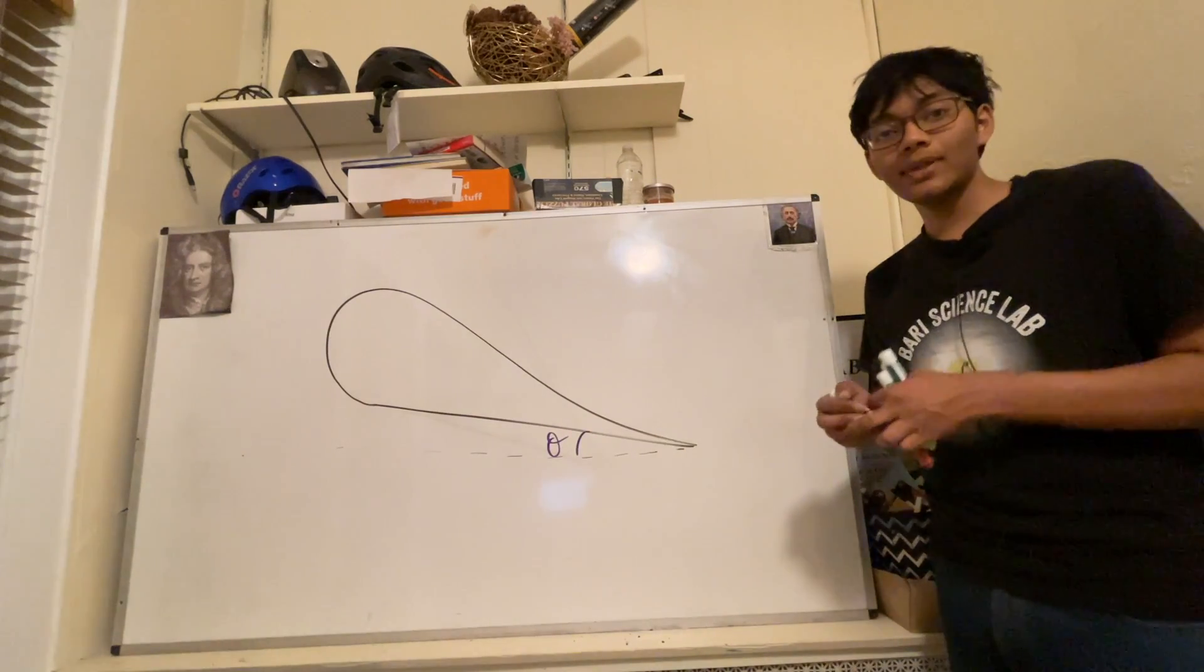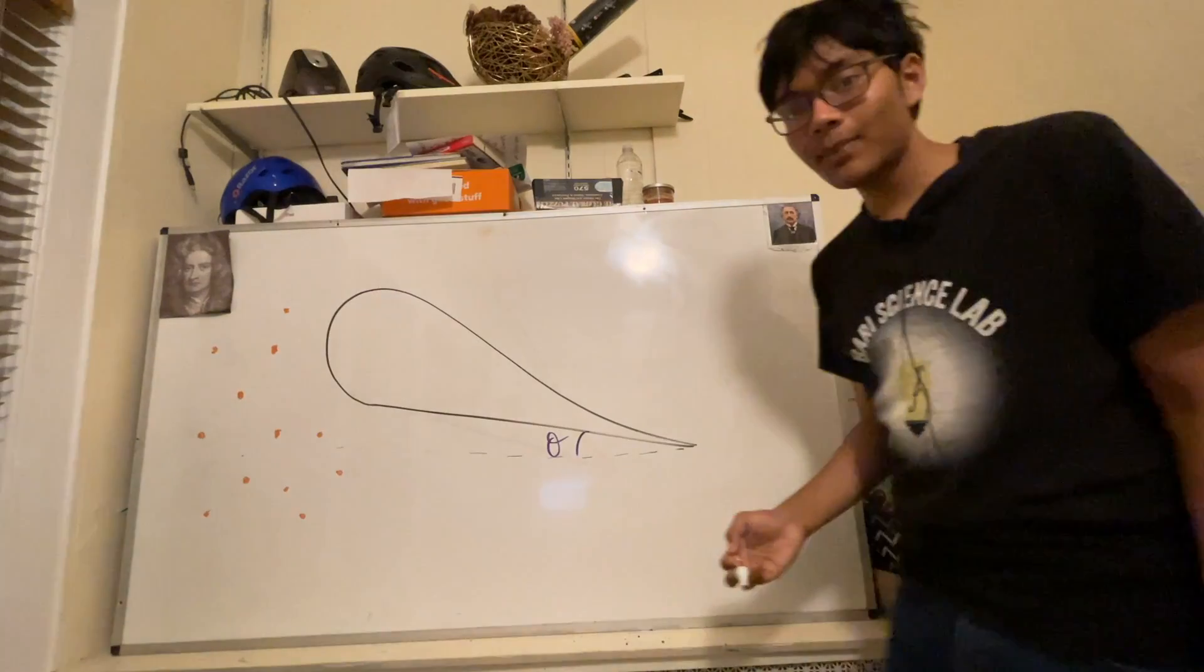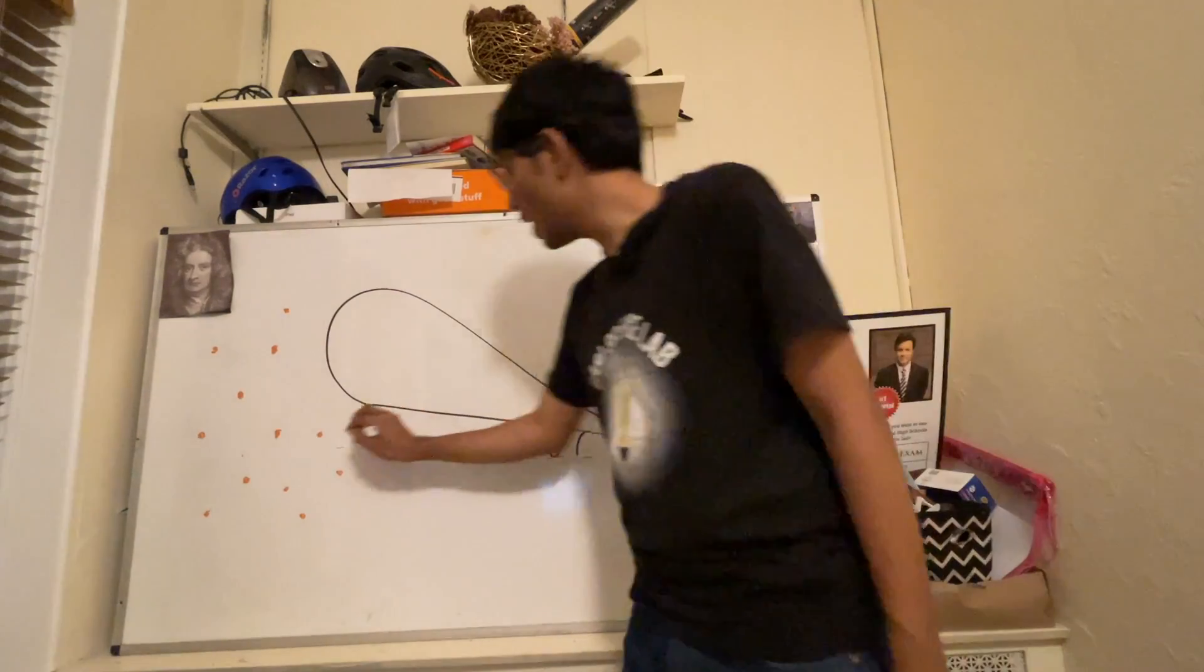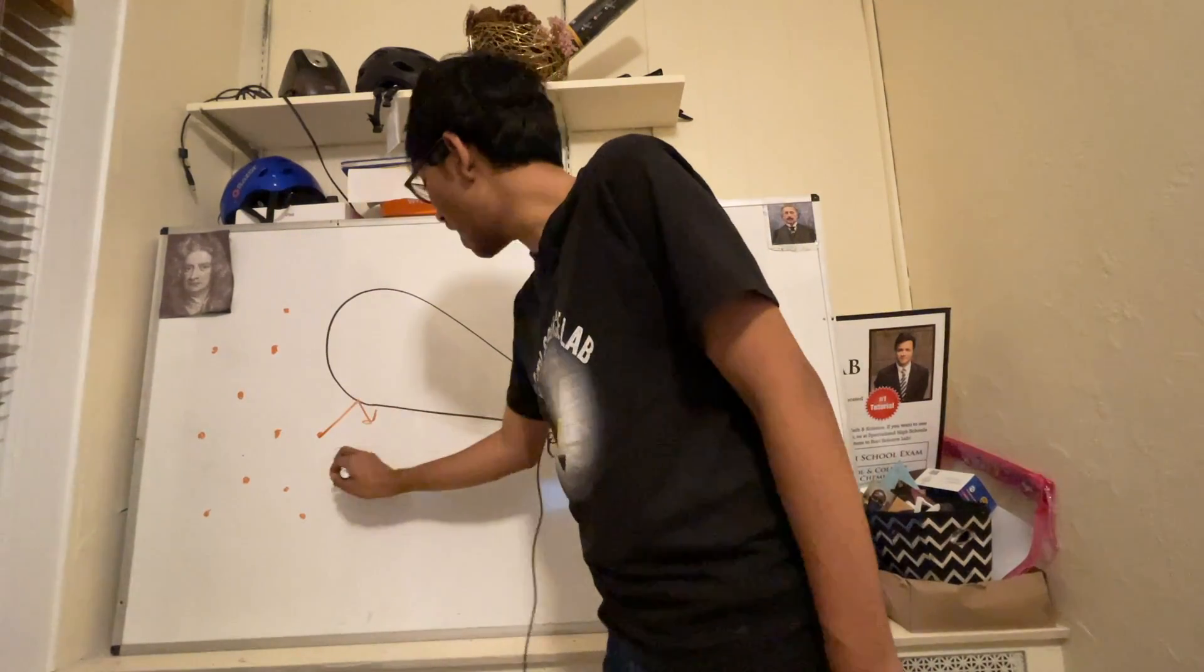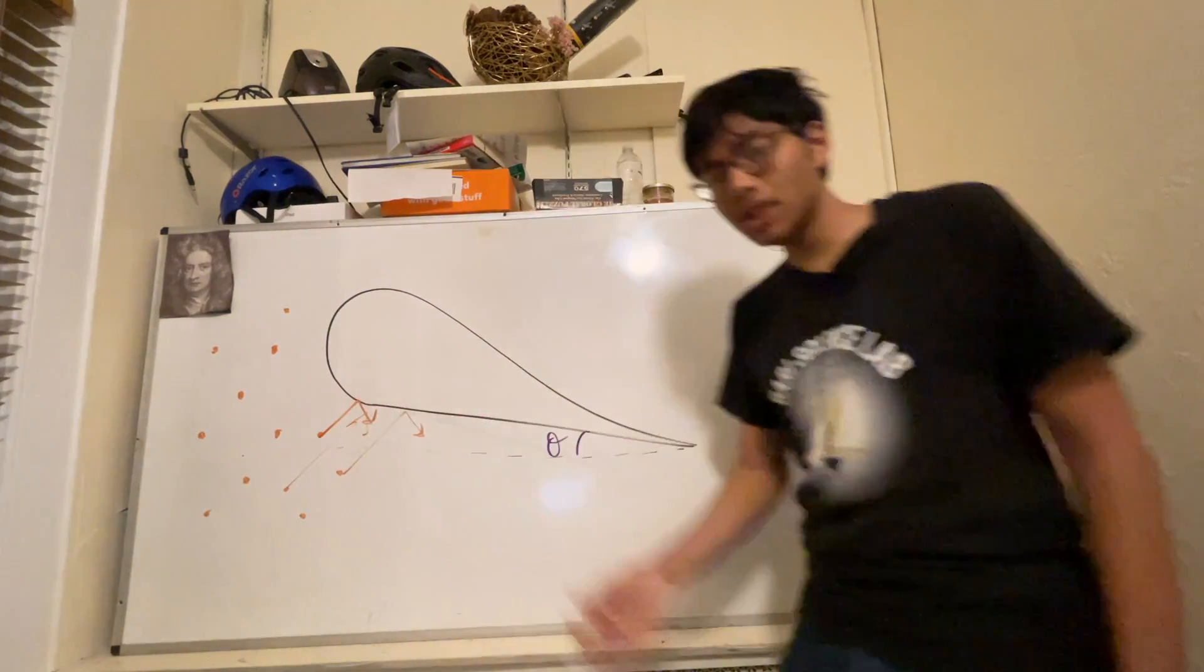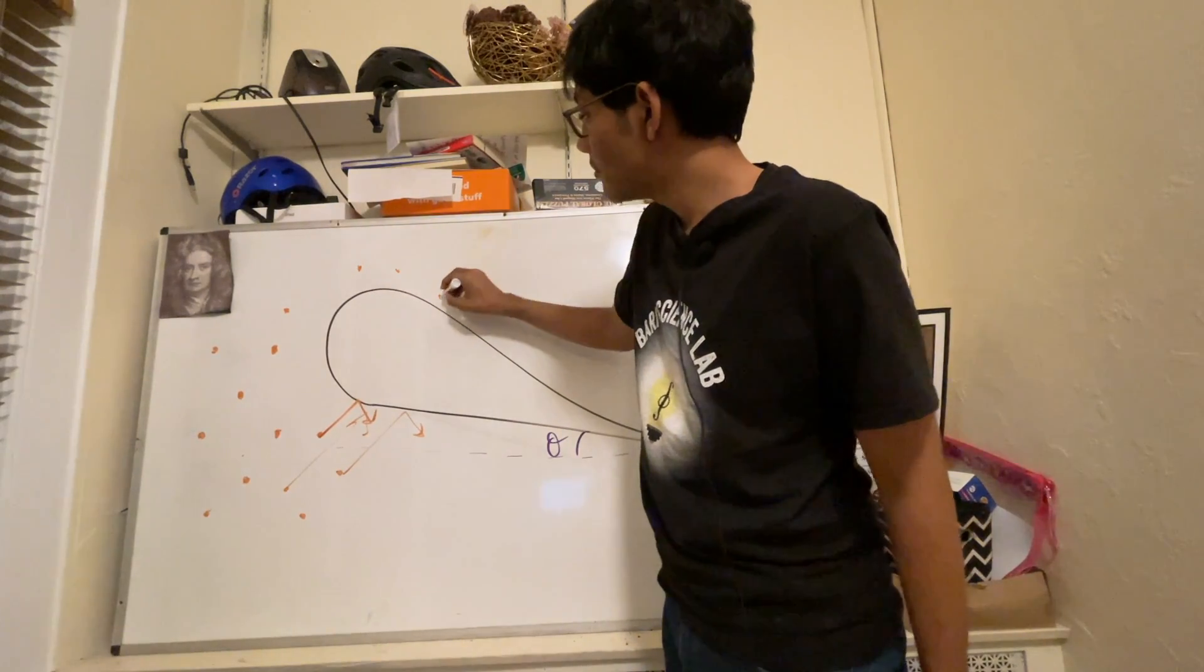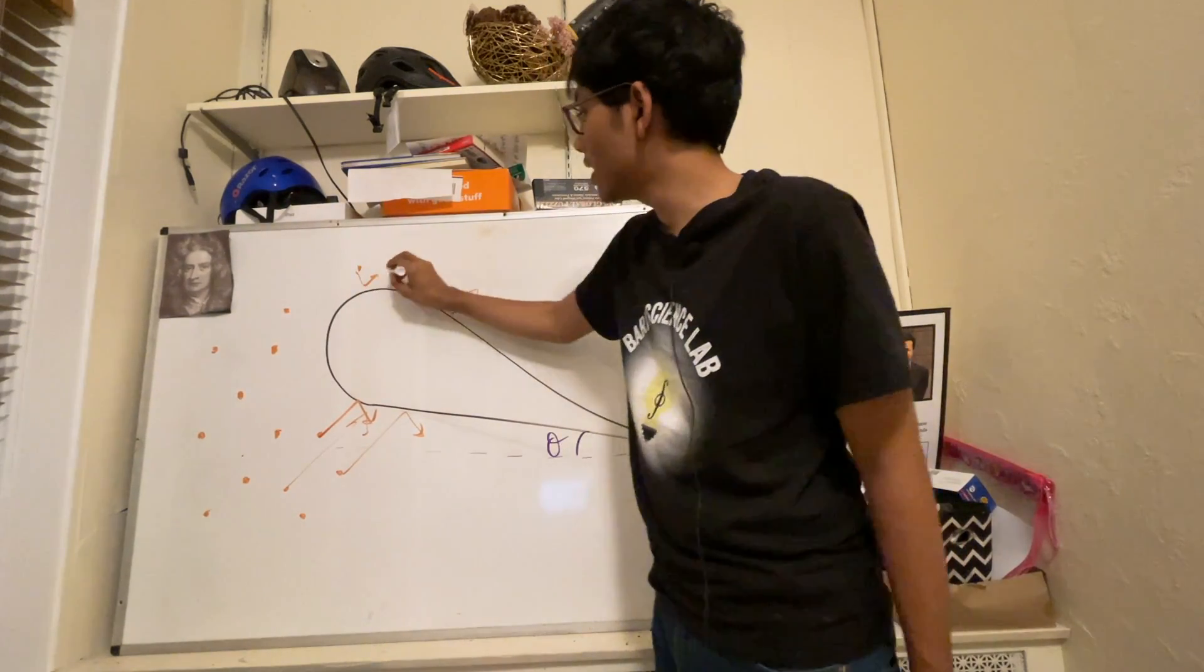Now, what happens is you've got air molecules everywhere. Remember, air is gas. What happens is all of these air molecules on the bottom, they start hitting the plane violently and bouncing up. It's almost like they're pushing the plane upwards. On the other hand, the molecules on the top, they also hit the airfoil, but maybe just not as violently.